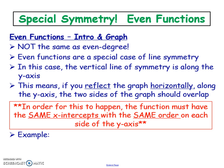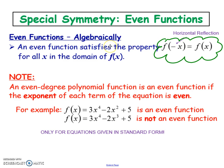An even symmetrical function is not the same as an even degree function. An even degree function is anything with an even exponent — so that's x², x⁴, x⁶, and so on. Now, out of all of those even degrees, you may or may not have even symmetry. We'll talk about the algebra later.